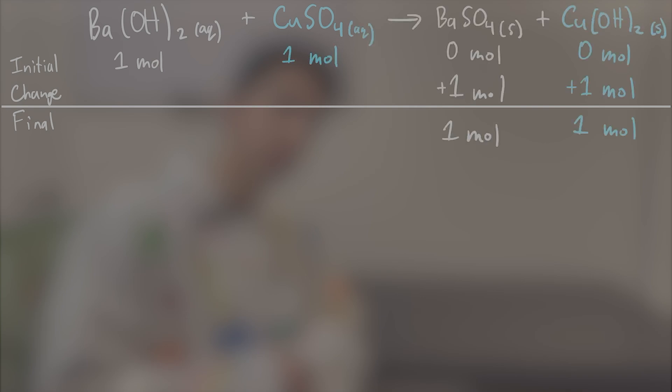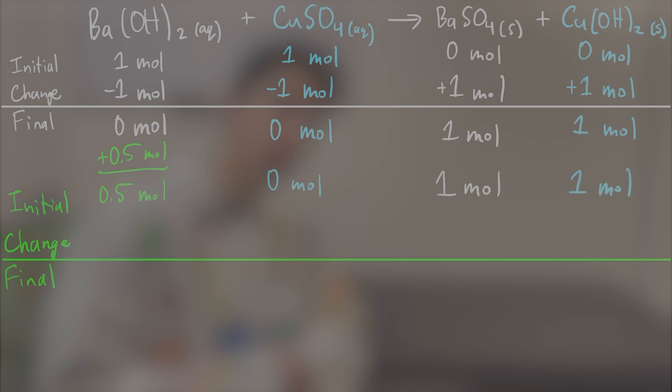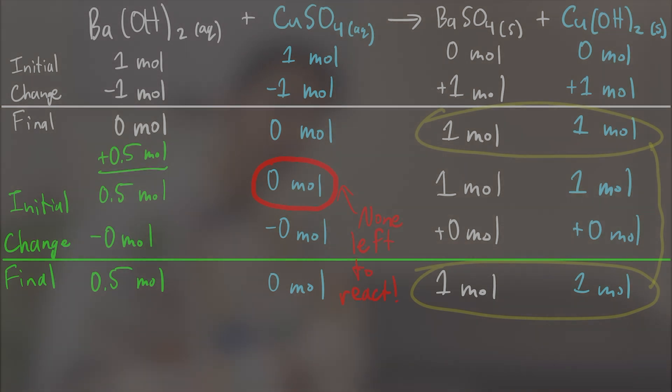For example, if I combine one mole of barium hydroxide with one mole of copper sulfate, I get one mole of barium sulfate and one mole of copper hydroxide. If I then add, say, 0.5 moles more barium hydroxide, I'll still have the same amount of the two products, because there won't be enough copper sulfate to react with the added barium hydroxide.